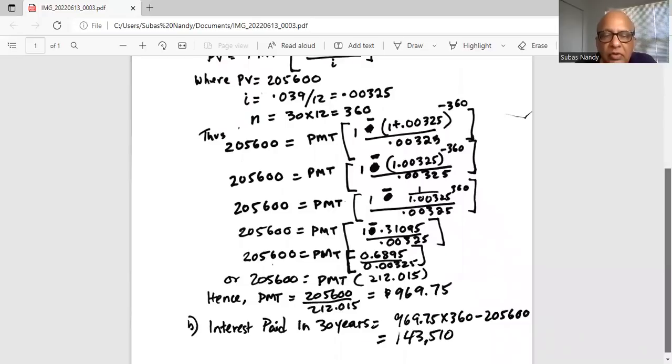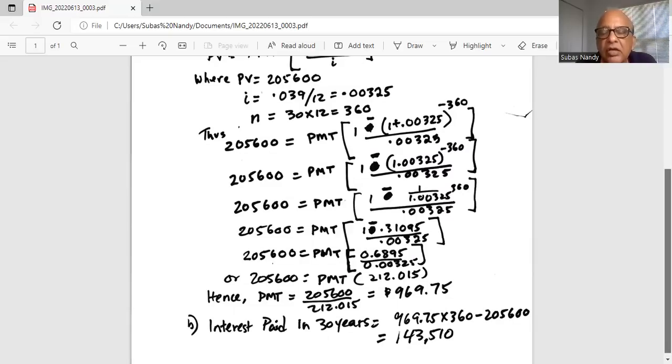Now to get the payment from this equation, we have 205,600 equals payment multiplied by 212.015. So we divide by 212.015 on the left of the equation as well as on the right of the equal sign.